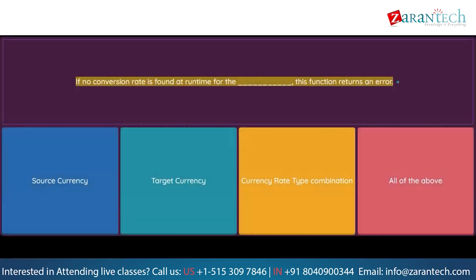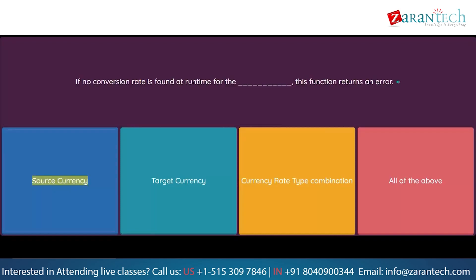Question: If no conversion rate is found at runtime for the ___, this function returns an error. Option 1: Source currency. Option 2: Target currency. Option 3: Currency rate type combination. Option 4: All of the above.